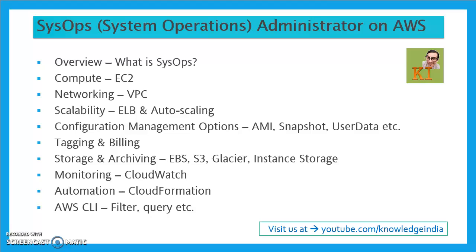For configuration management, there are options from Amazon such as AMI and user data — we've already discussed both in the EC2 video, but we'll also cover when to use which and the pros and cons of each. We'll also cover tagging: you can add tags to any service you launch, and if you enable a tag as a cost allocation tag, it starts appearing in the detailed billing file. I'll show you how to enable that and how it helps.